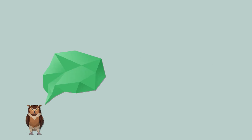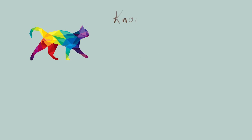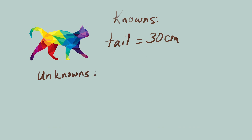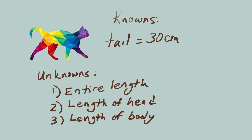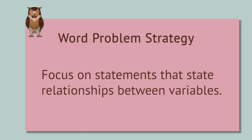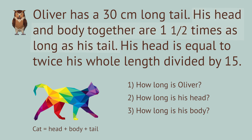It really is like speaking a different language — or a dialect, anyway. Here's what we know: the length of Oliver's tail equals 30cm. We don't know his entire length — head plus body plus tail — we don't know the length of his head, or the length of his body. But we have some sentences that tell us relationships between the length of the tail and these other parts of Oliver. There are three sentences that give us clues about how these lengths are all related to each other.